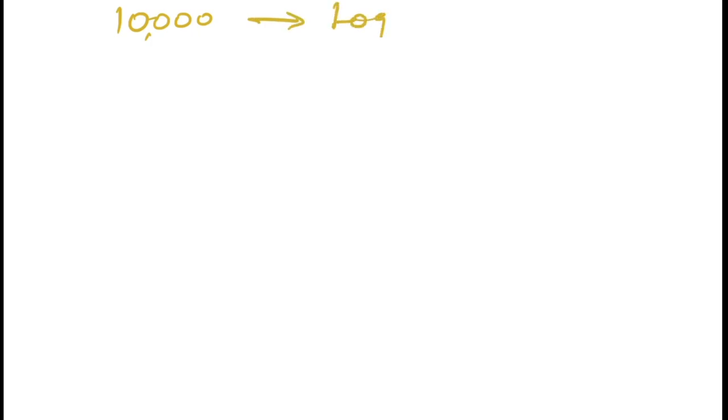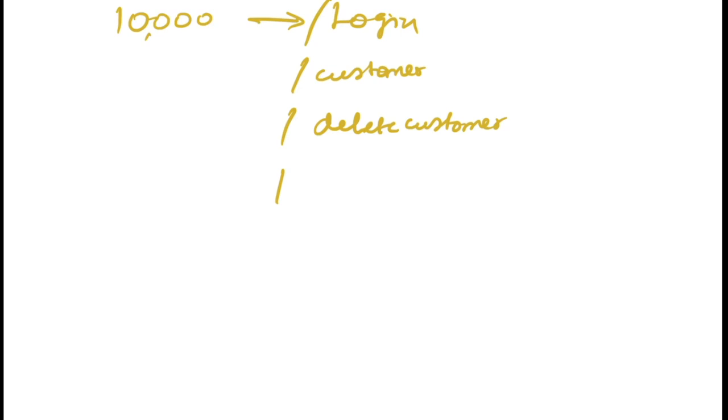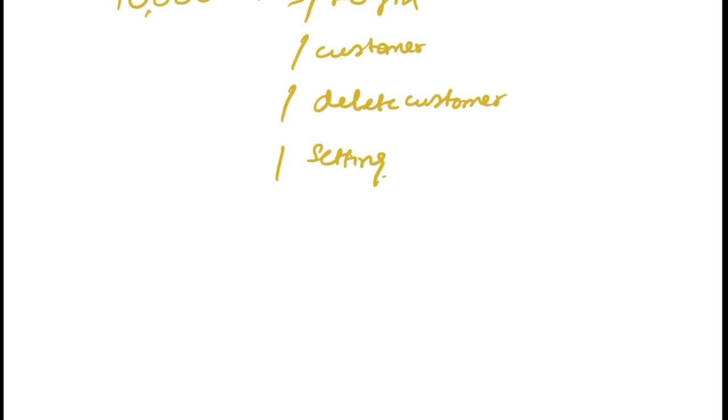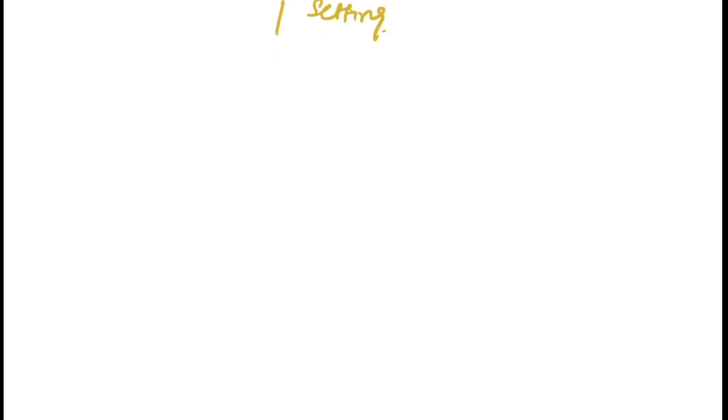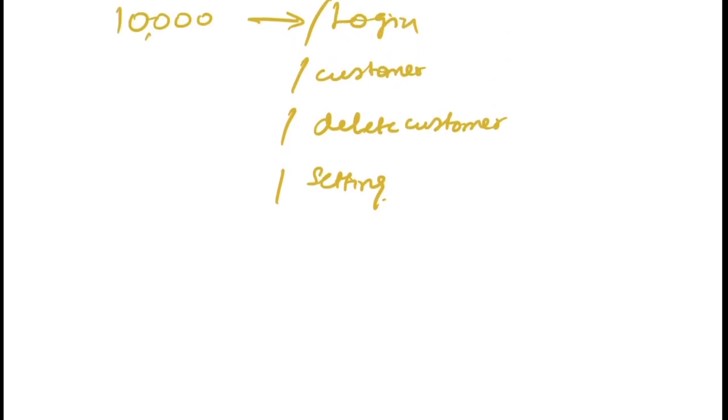Let's quickly see how it's going to look in our whiteboard discussion. So let's say you're going to build an application which is going to have 10,000 users, and you're going to perform operations such as login, get customer details, delete customers, and get settings information. So these are the three APIs within our application. These are four services within our application that we need to build, and we'll start from the small scale.